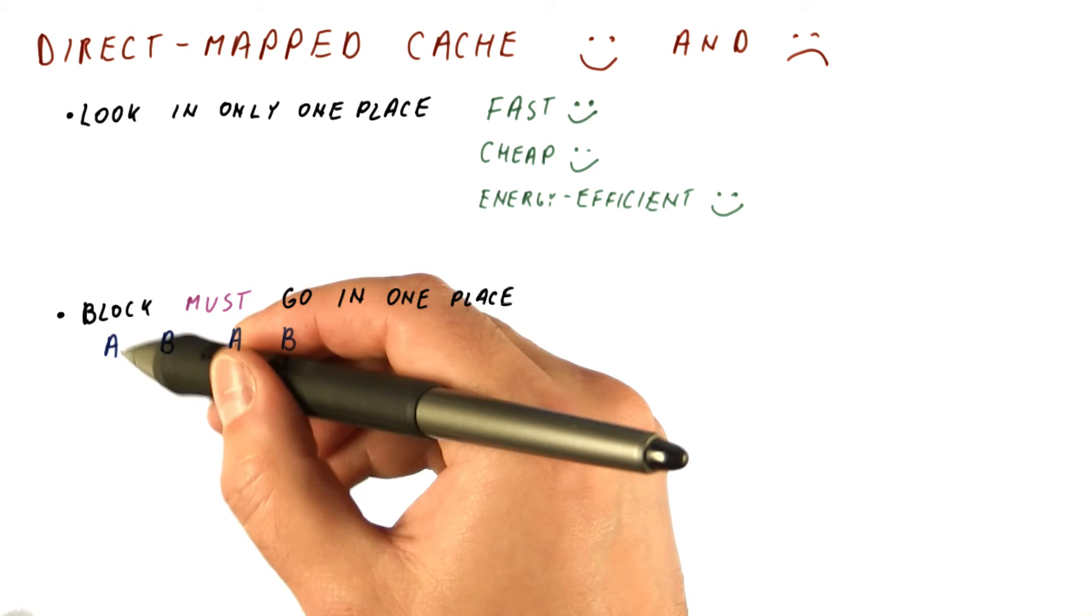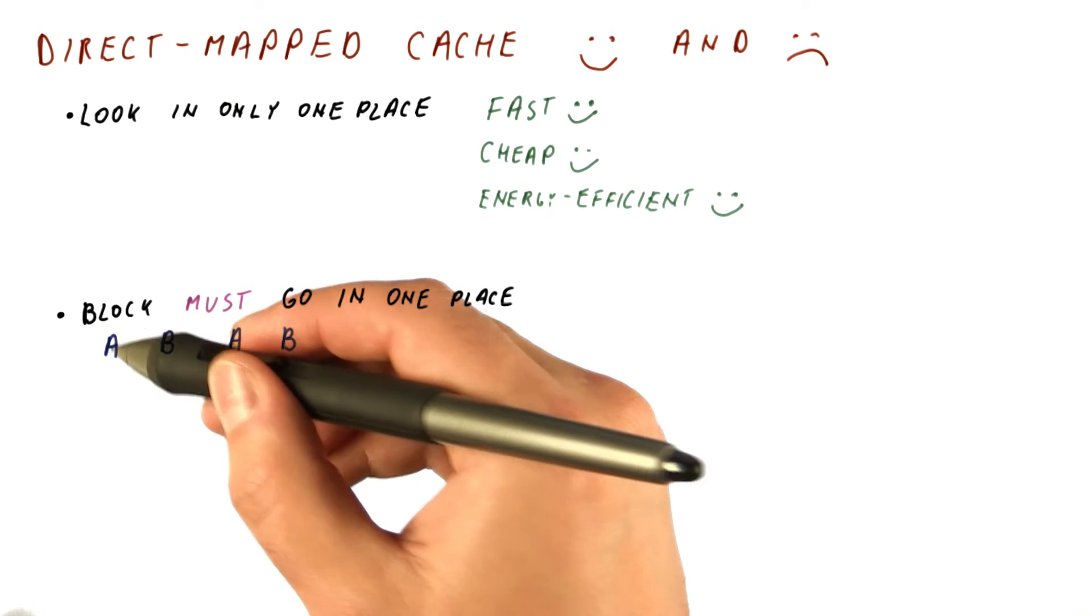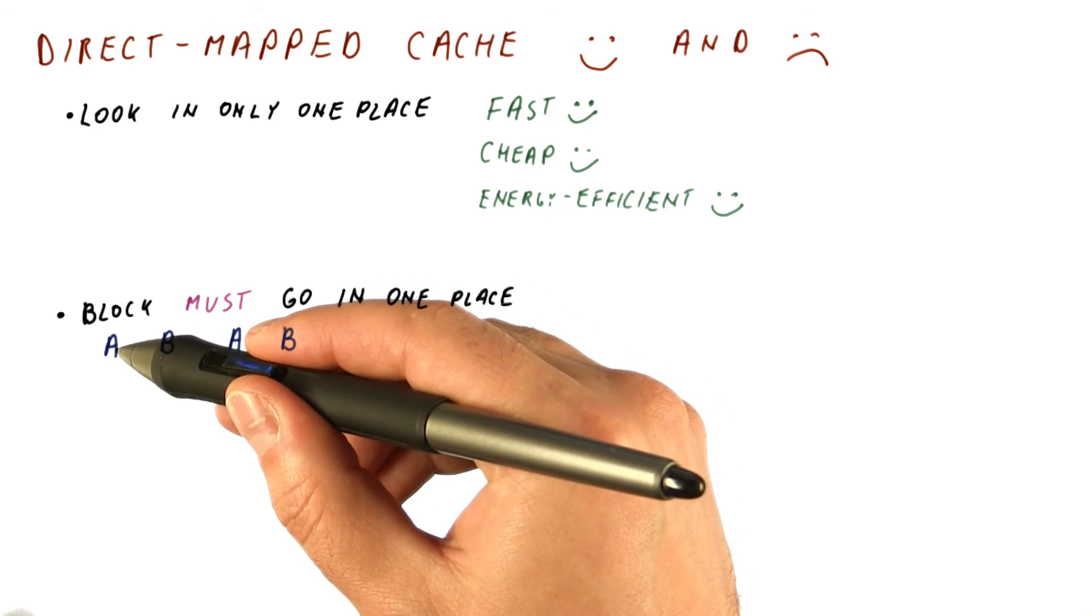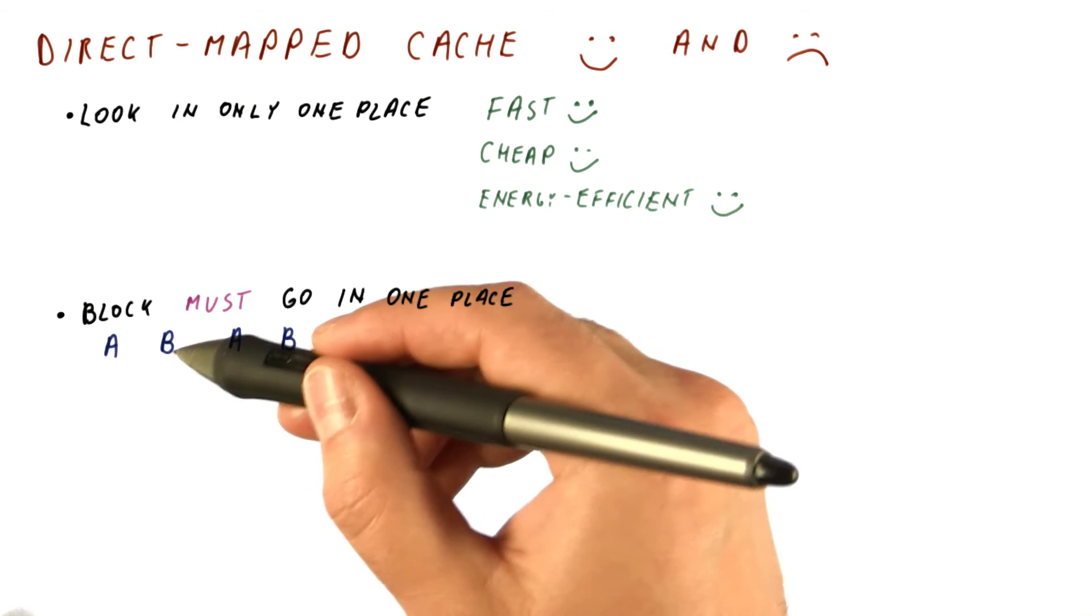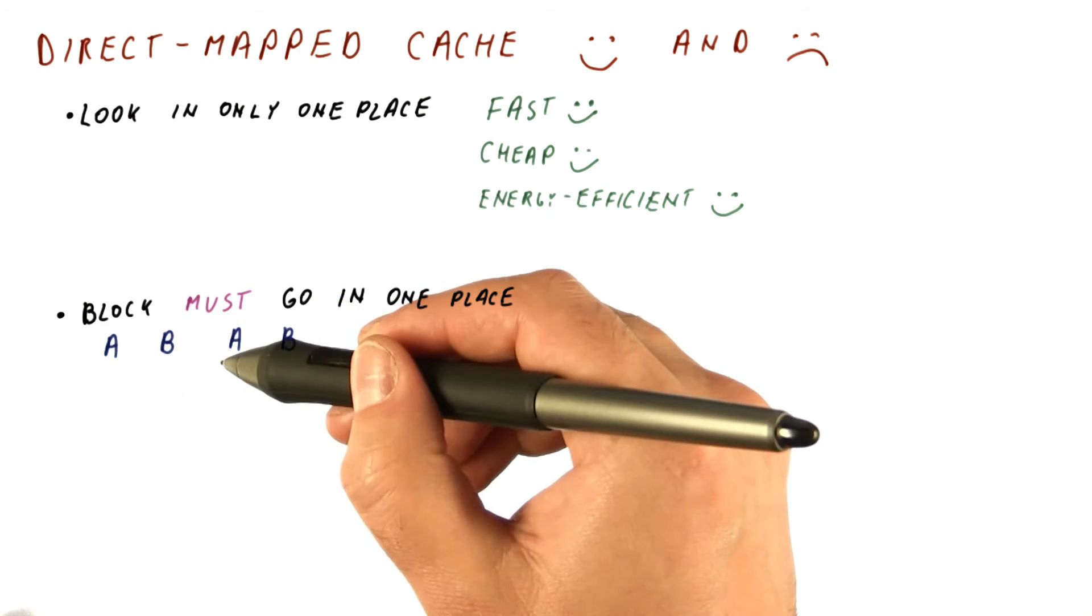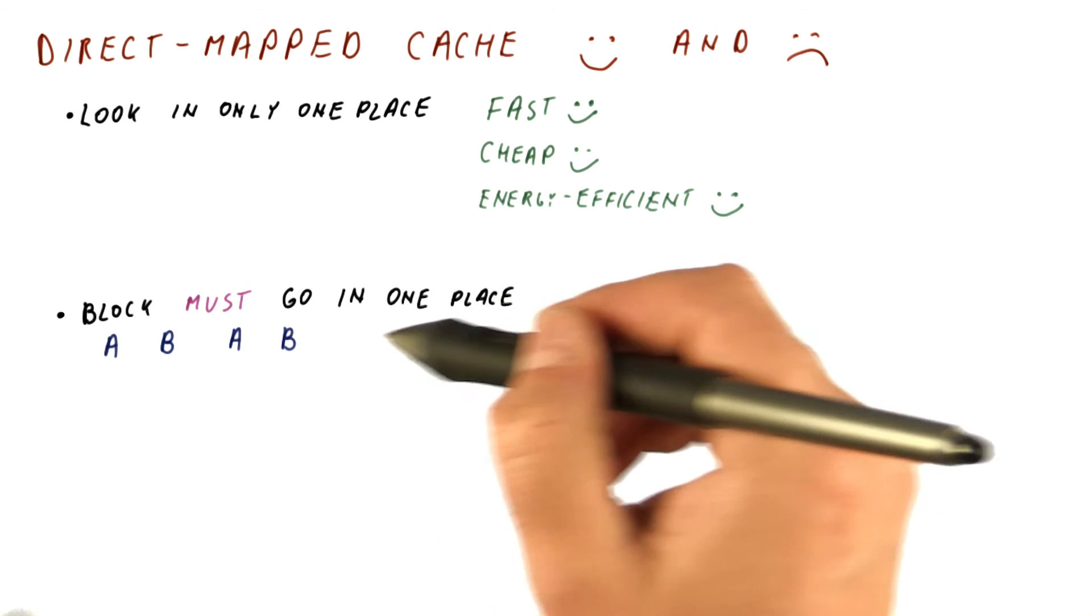When we access A, we will bring it to the cache. When we access B, we need to put it in the same place where A is currently, so A needs to be kicked out. There is no choice about what we kick out. A has to go out. When we access A again, B needs to be kicked out, and so on.